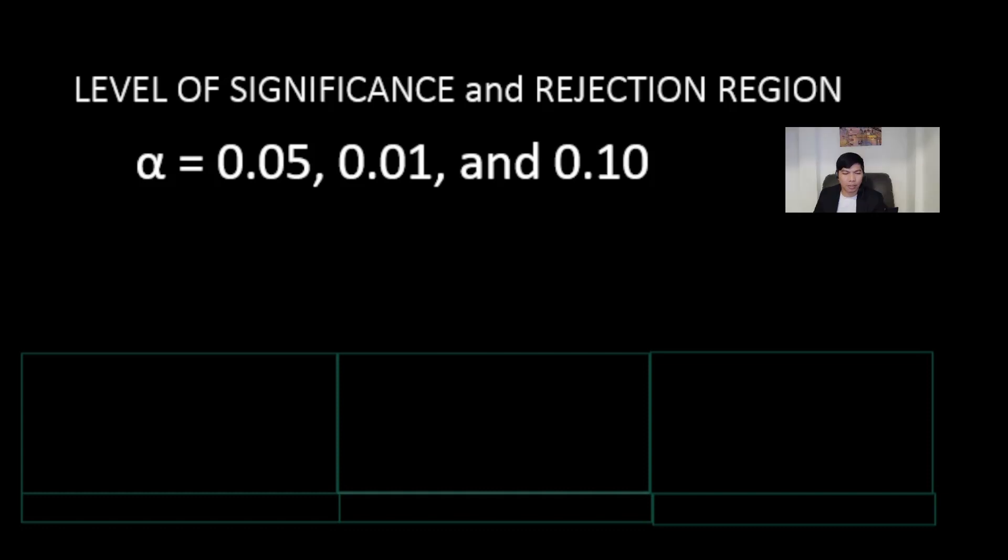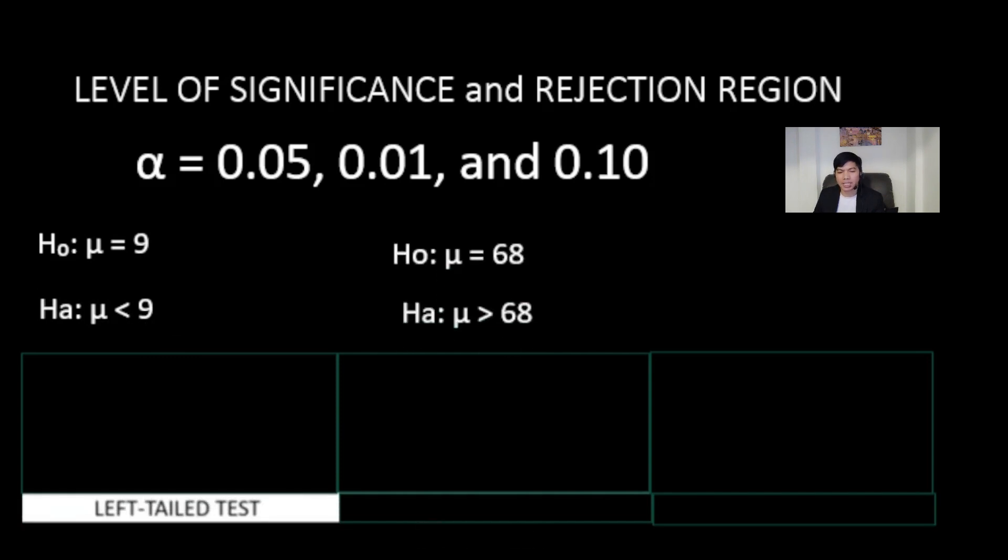Take example number one. The arrow is pointing to the left. We will employ a left-tailed test. In example number two, where the symbol points to the right, the correct choice is a right-tailed test.